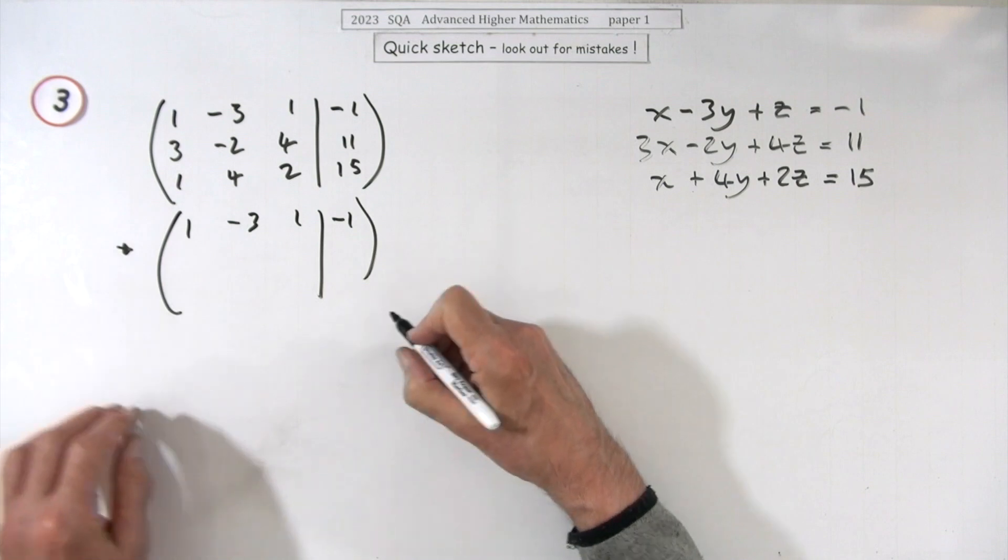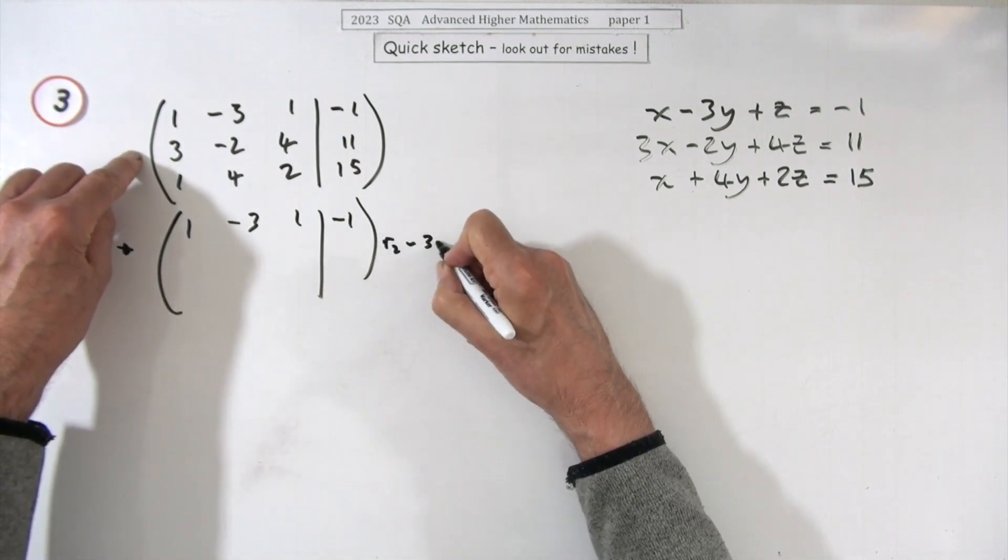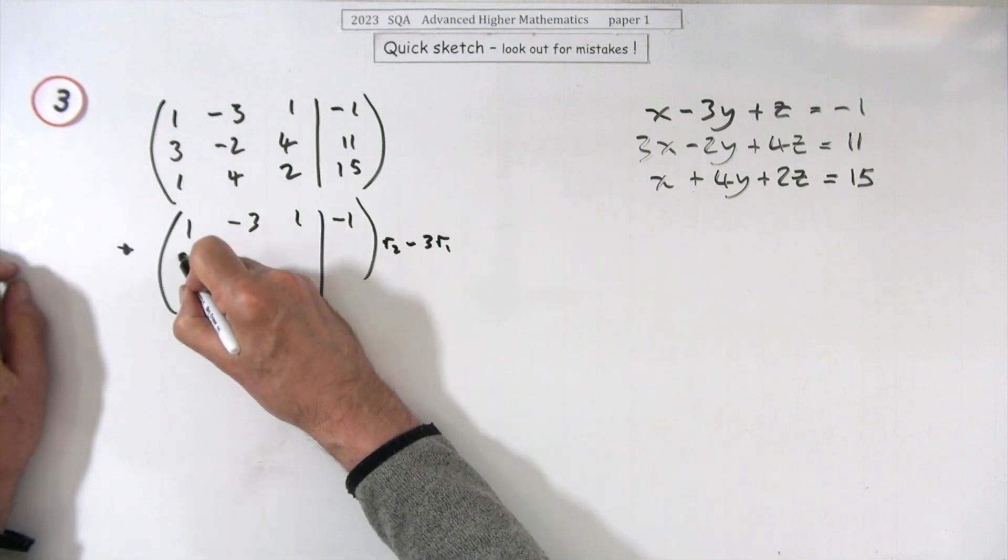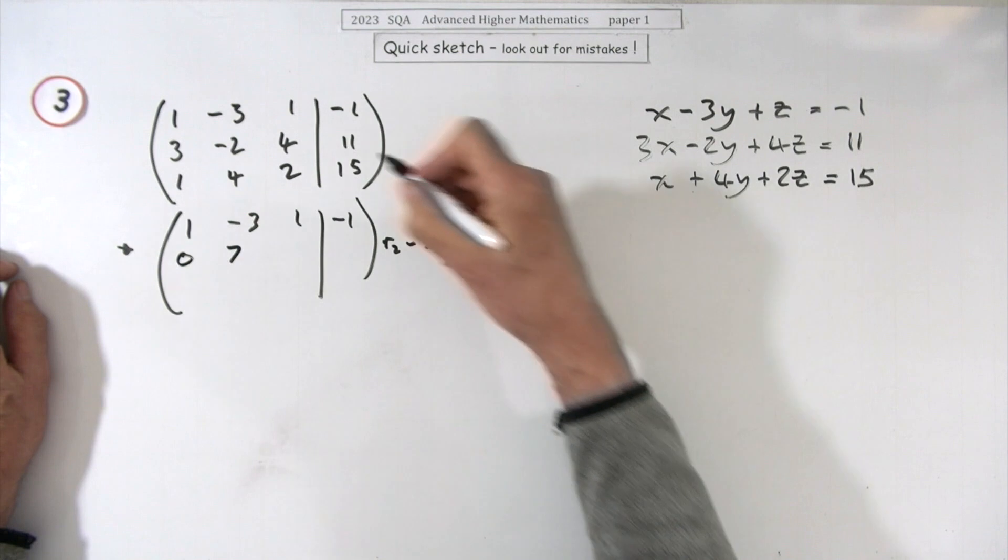This row, row two, knock it out by doing minus three lots of row one. That'll be zero, and then you've got negative two plus nine is seven, four take away three is one, eleven plus three is fourteen.